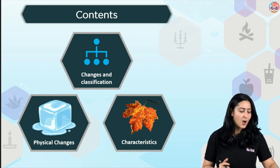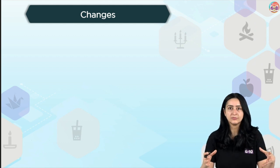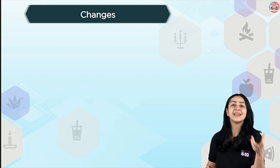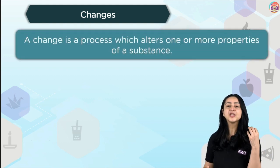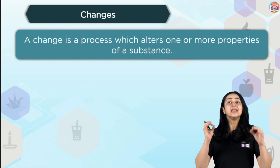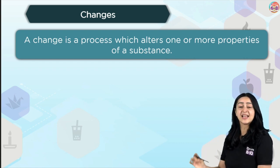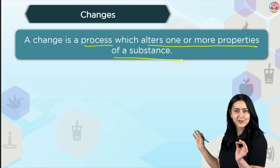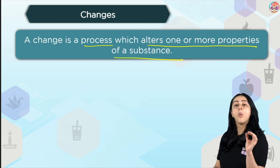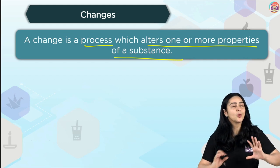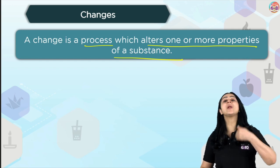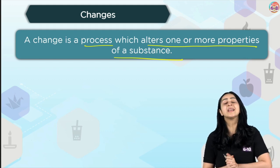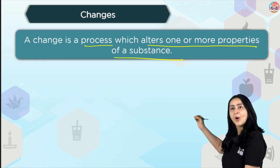Let's first think of the word change. We keep using this word all the time — change is the only constant. But what exactly is change? The scientific definition of change is: a change is a process where one or more properties of a substance get altered. If you get a question in your exam asking what is a change, this is what you will say: a change is a process which alters one or more properties of a substance.